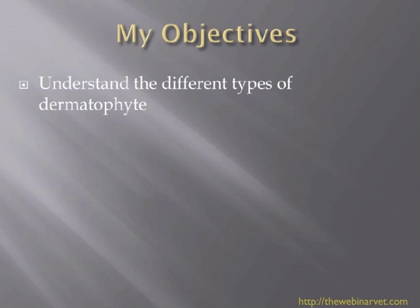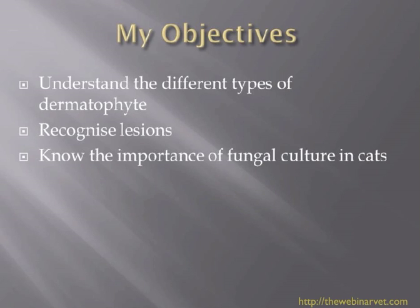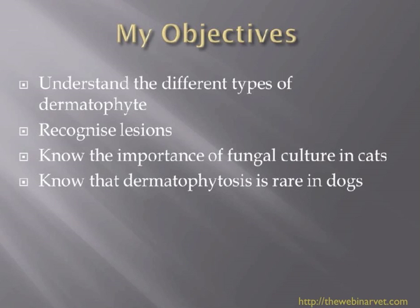My objectives for today are that by the end of the webinar you understand the different types of dermatophytes, that you'll be able to recognize lesions, and that you'll know the importance of fungal culture in cats. We really should, as part of our baseline database with any cat with a dermatological problem, be doing a fungal culture. I also want you to realize that dermatophytosis is rare in dogs — some people see a ring lesion on a dog, which usually is an epidermal collarette, and they immediately think of dermatophytosis, and that's not the case.